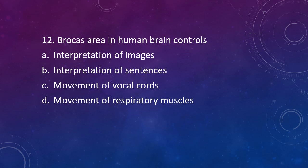Question number 12. Broca's area in human brain controls: interpretation of images, interpretation of sentences, movement of vocal cord, or movement of respiratory muscle. The correct answer is Option C, that is movement of vocal cord. Broca's area of brain is involved in speaking.